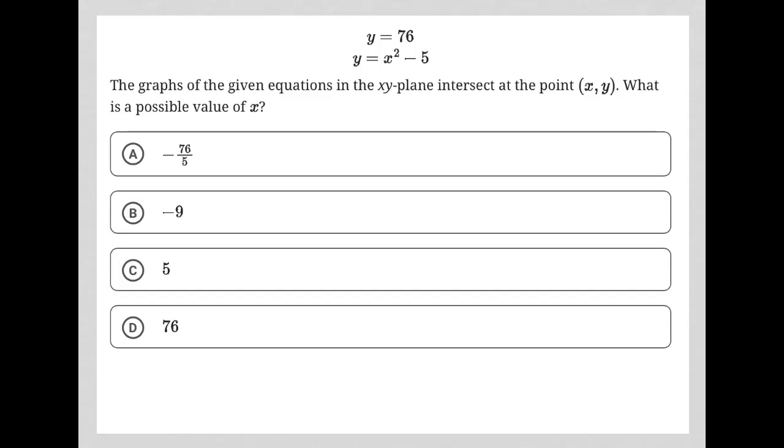So this question starts off by providing us with this system of equations. We're told that y equals 76, but we're also told that y equals x squared minus 5.